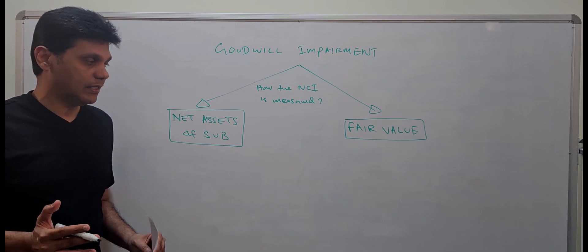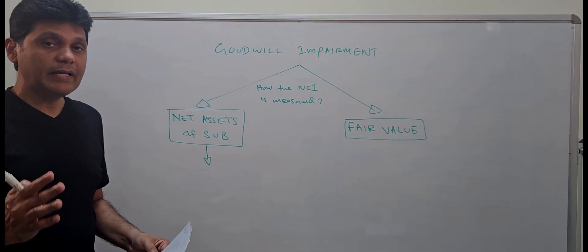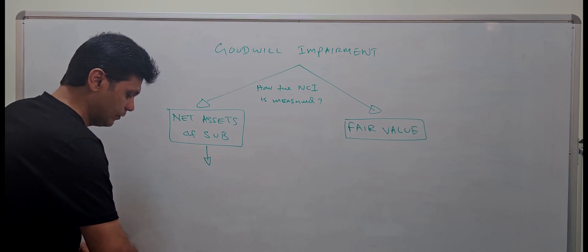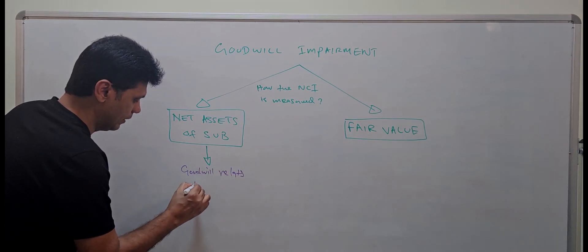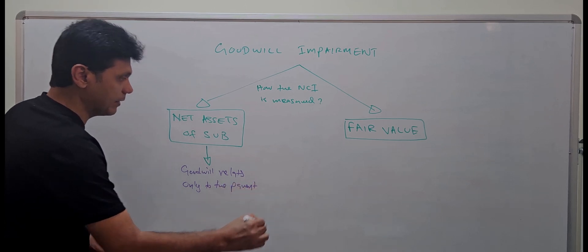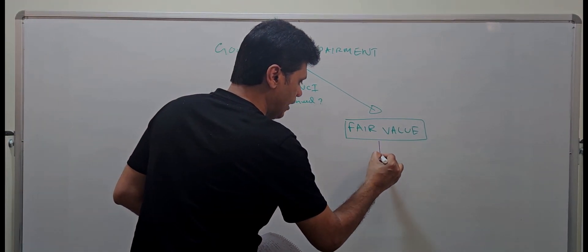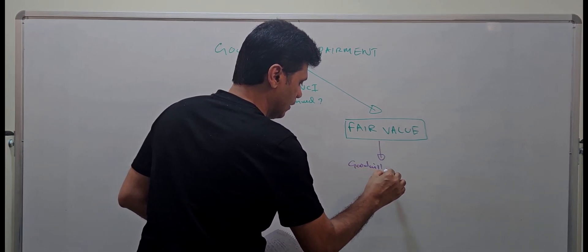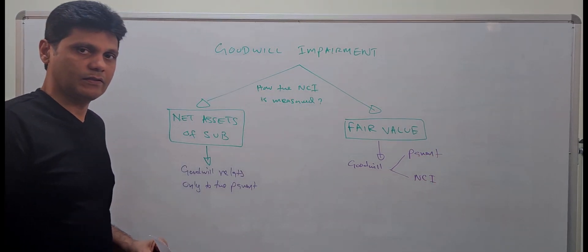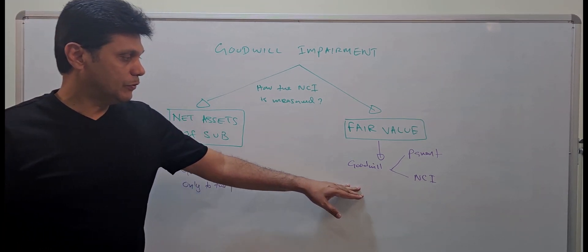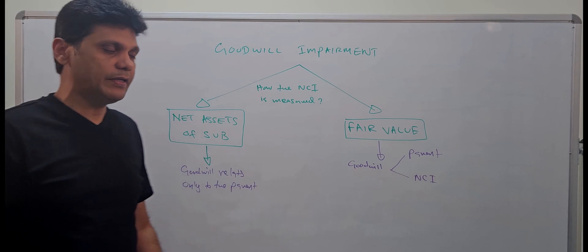When the NCI is measured at net assets, goodwill relates only to the parent company. However, if the NCI is measured at fair value, then goodwill relates to the parent company portion as well as the non-controlling interest. So you need to allocate the goodwill impairment based on the ownership of the parent and the non-controlling interest.